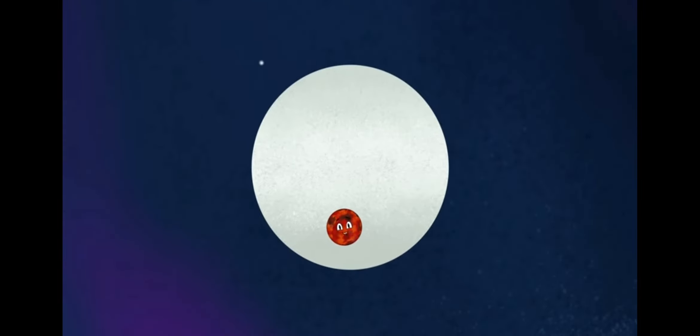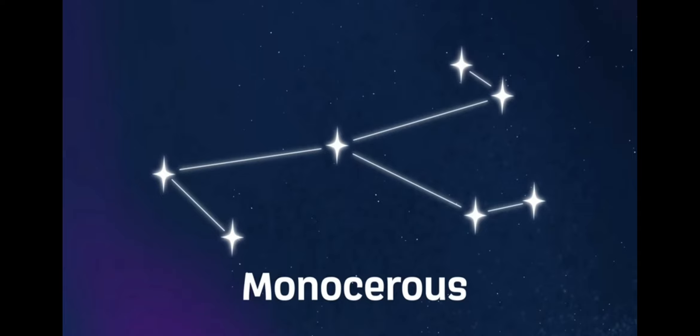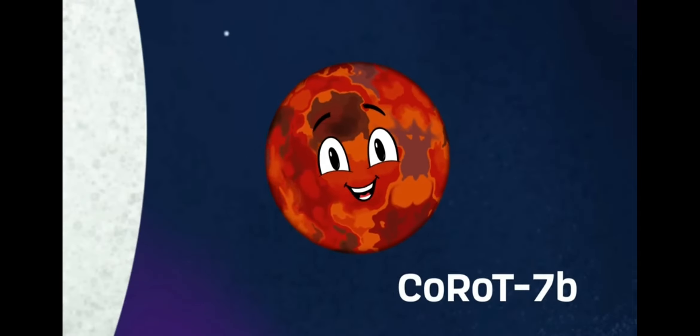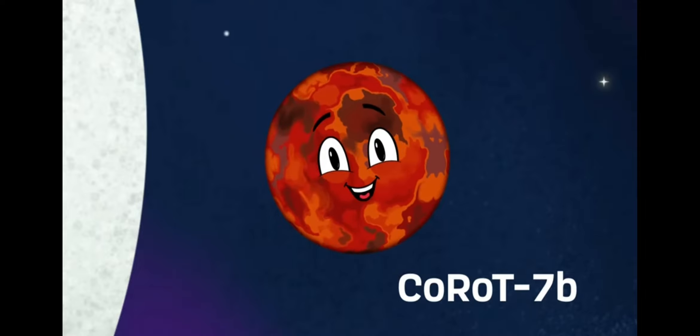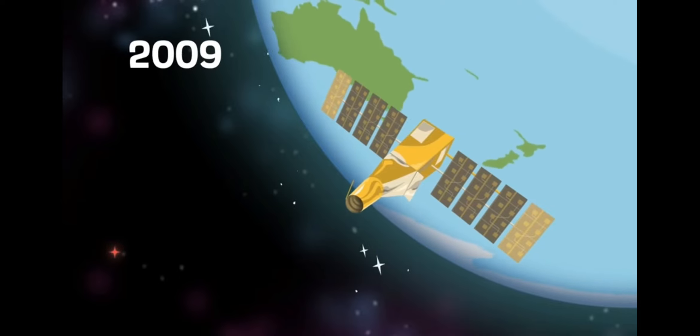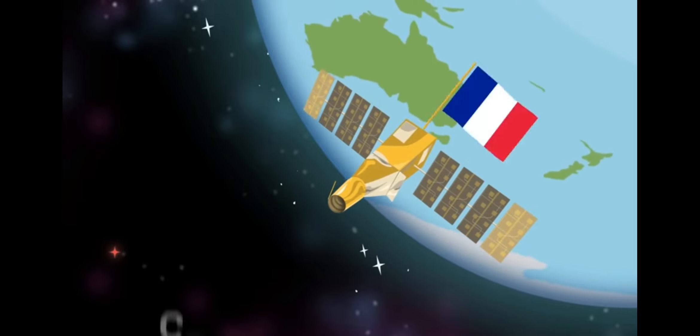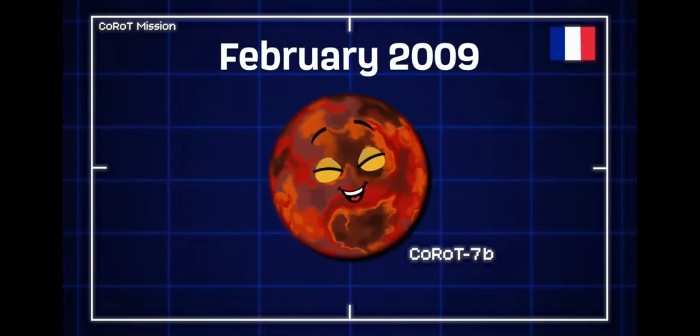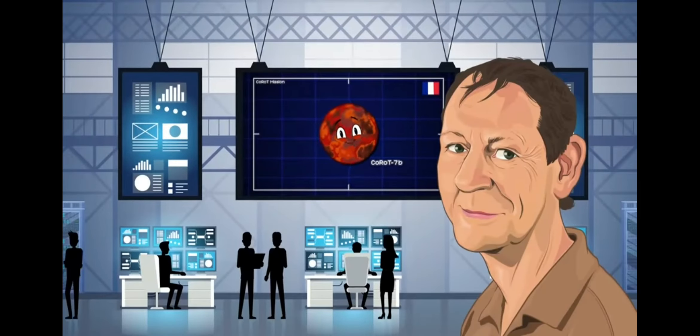I'm an exoplanet orbiting the star CoRoT-7 you see, in the constellation of Monoceros. My name is CoRoT-7b. I was first detected photometrically in 2009 by the French-led CoRoT mission. In the month of February, I refine.